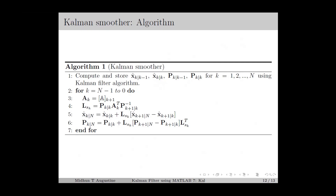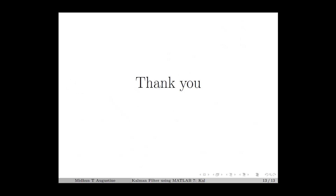The Kalman Smoother gives the expectation and variance of the state vector as the smooth estimate x̂k|n and variance Pk|n respectively. In the next lecture, we discuss numerical examples of the Kalman Smoother and its simulation. That completes this lecture — thanks for listening.